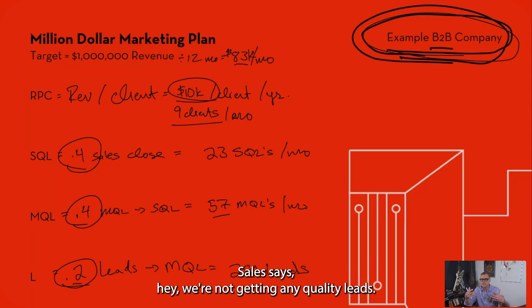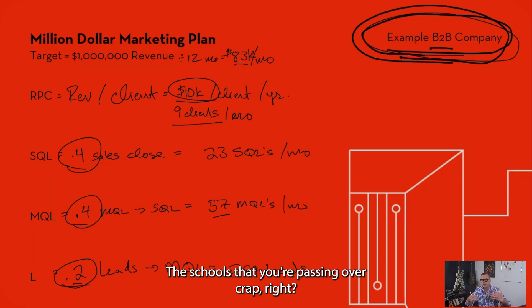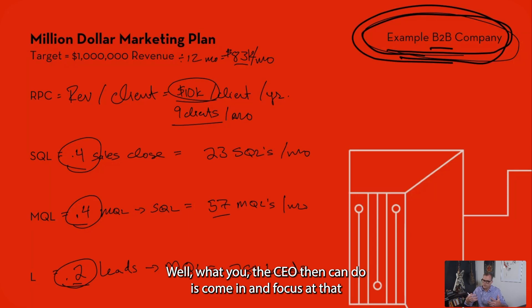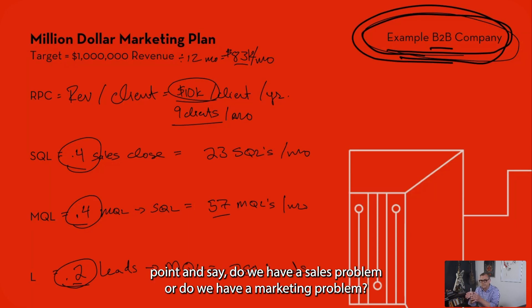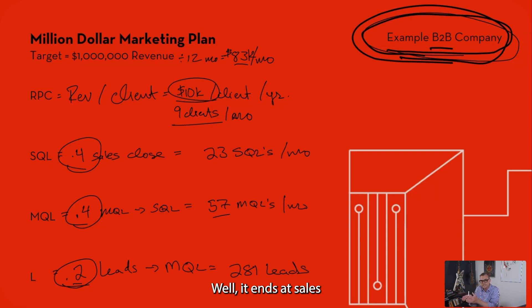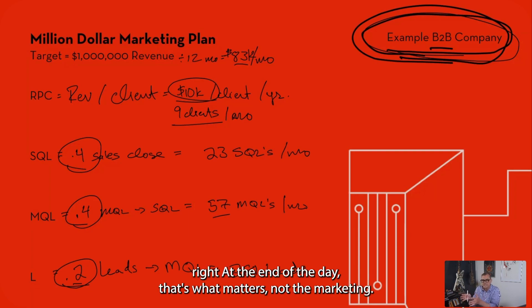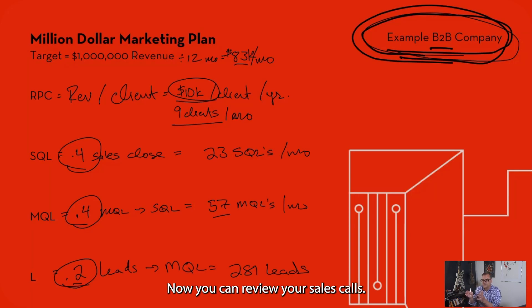Sales says they're not getting any quality leads — the MQLs that marketing is passing over are poor quality. What you, the CEO, can then do is come in and say: do we have a sales problem or do we have a marketing problem? Well, it ends at sales. At the end of the day, that's what matters. So we have to start with sales.